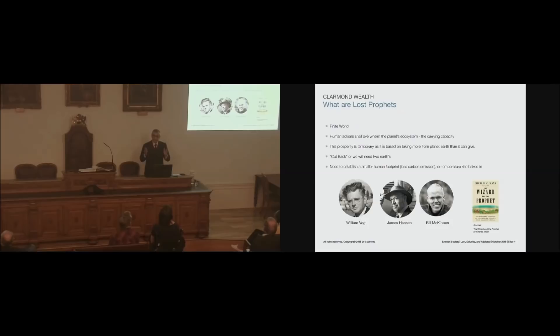Now enter the Lost Prophets and the Deluded Wizards. The Lost Prophets, the title comes from this book, The Wizard and the Prophet, by Charles Mann. The prophet here is William Vogt. And he essentially came up with the idea that the Earth is finite, it's overpopulated, and we're going to need two Earths, and we need to cut back. Next to him are two other prophets, James Hansen from NASA and Bill McKibben of 350 parts per millionth of carbon, who believe that the world is finite, that we're taking too much from planet Earth, and that we need to cut back and leave a smaller footprint for us to survive.